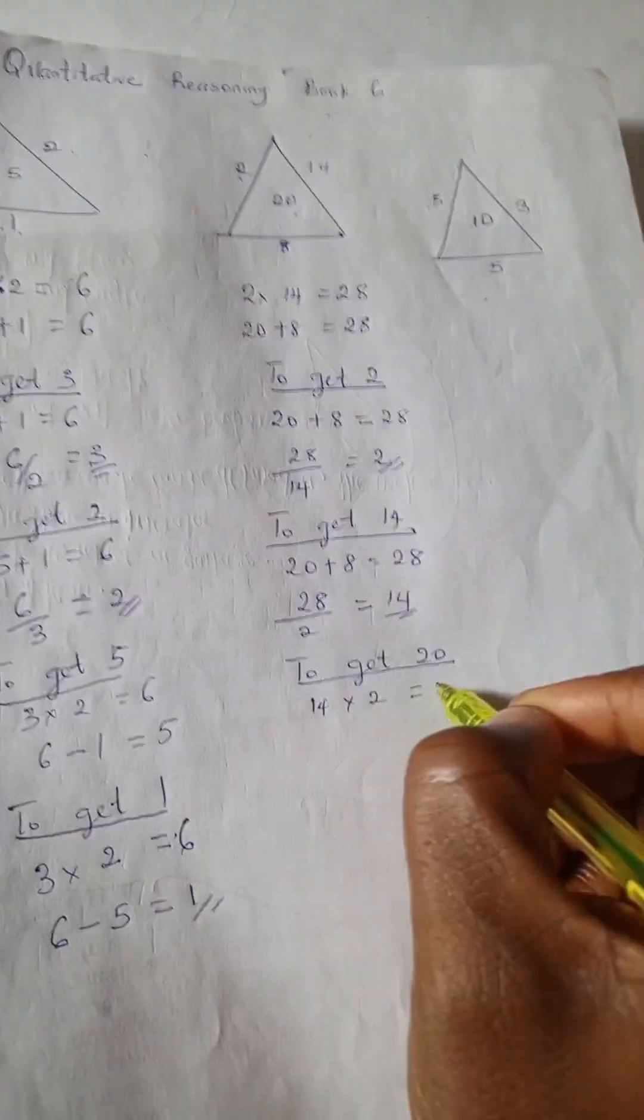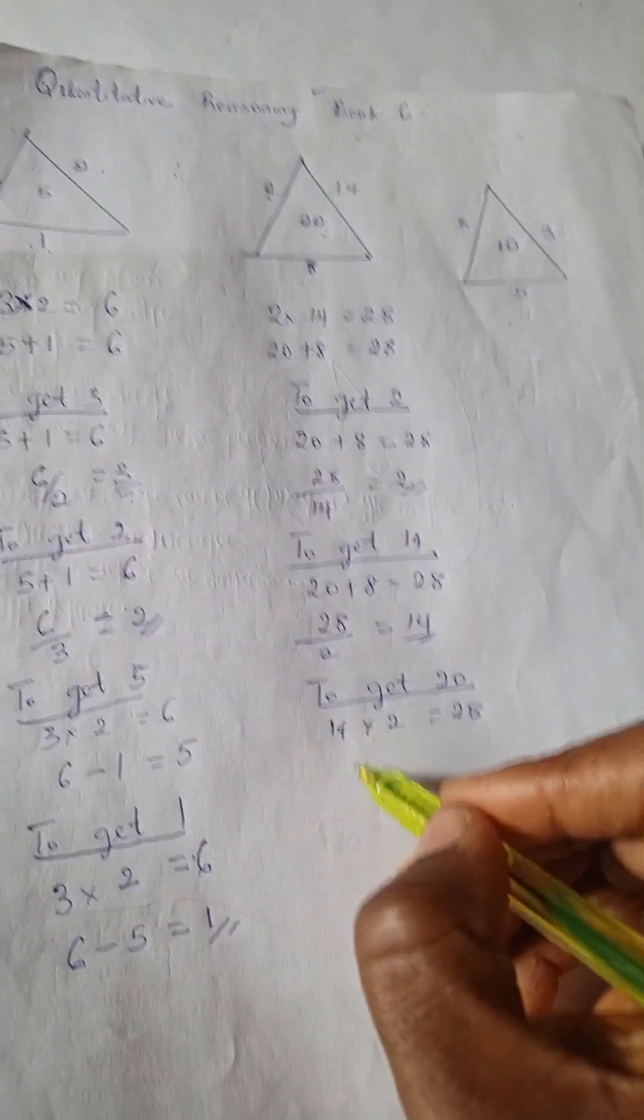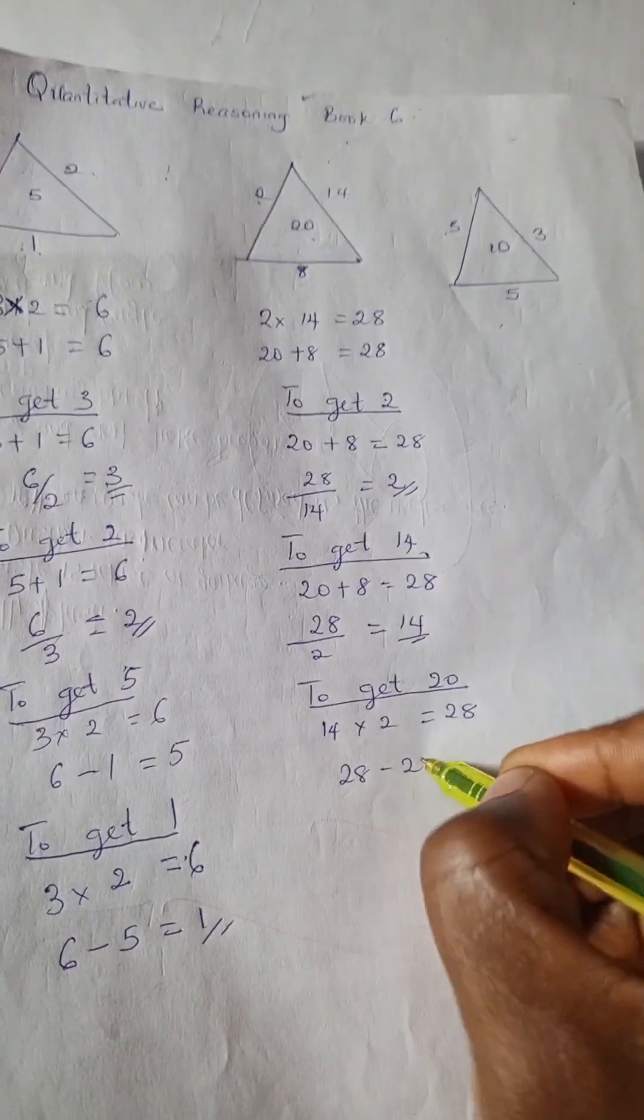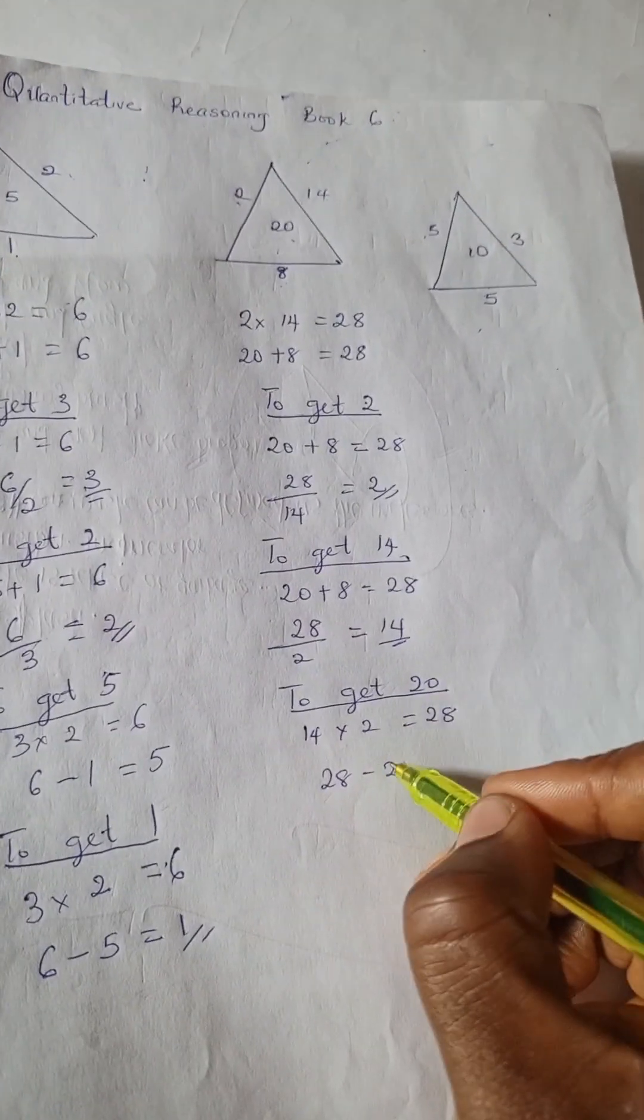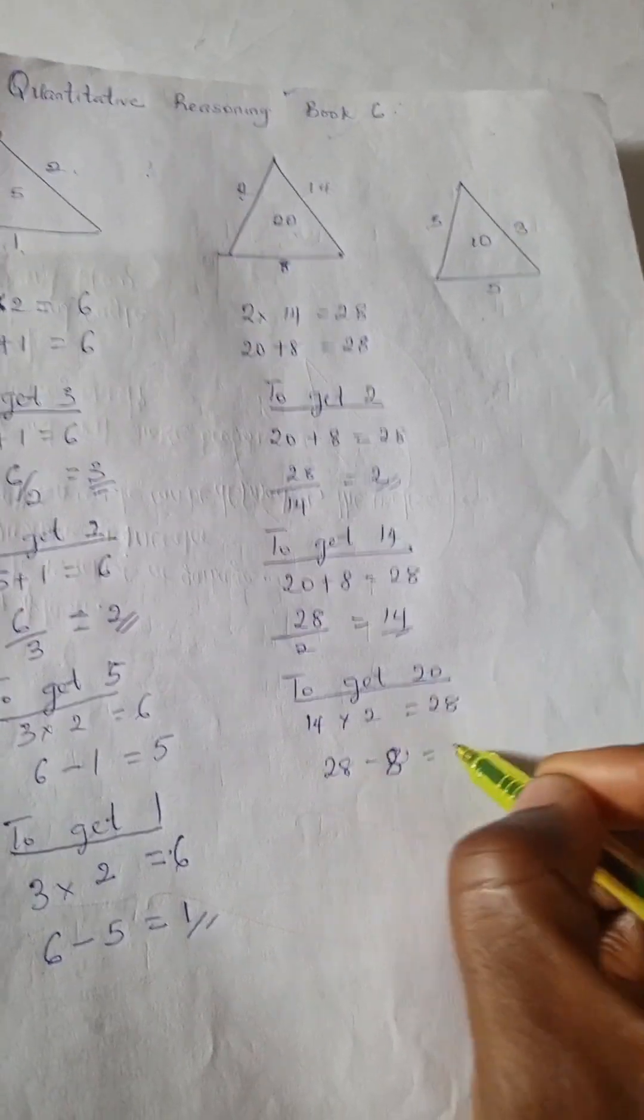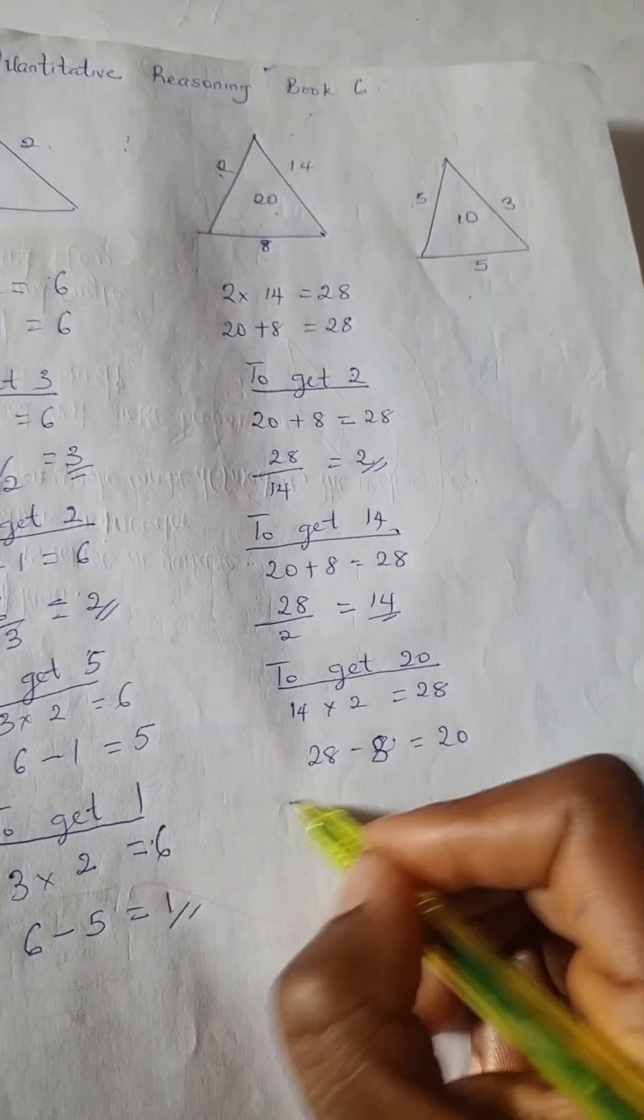We have 14 times 2 is 28, and 28 minus 8 is 20.